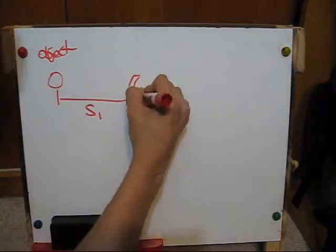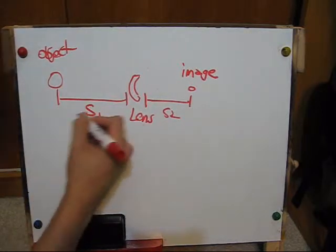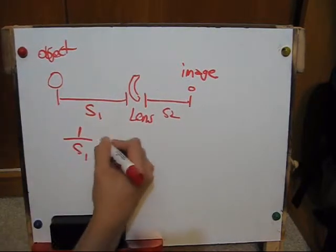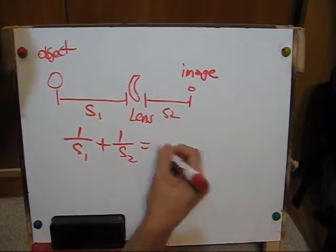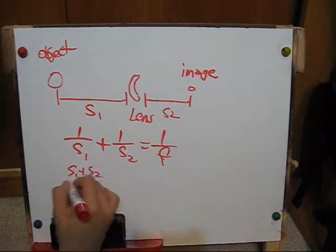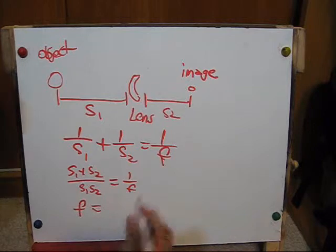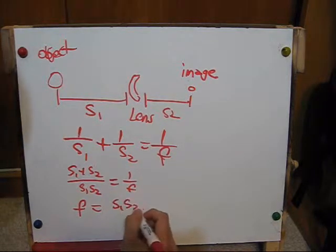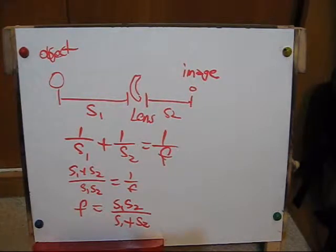To calculate the focal length of the lens, you take the reciprocal of the distance from the lens to the object and add it to the distance from the image to the lens, which gives you the reciprocal of the focal length. Solving for focal length, you get f equals distance from object to lens times distance from lens to image over the added distance.